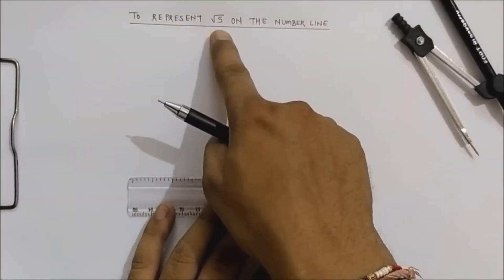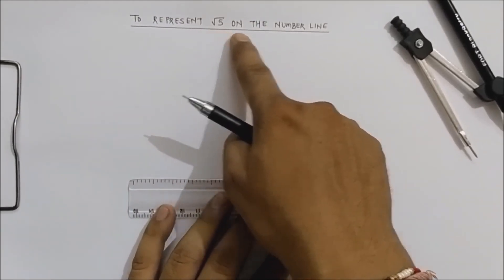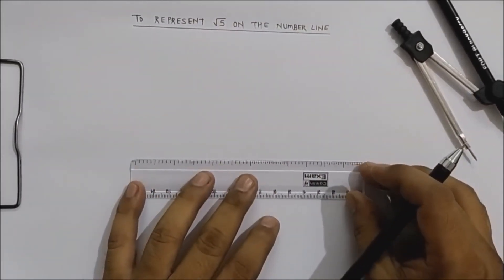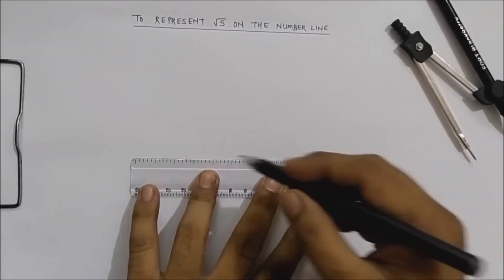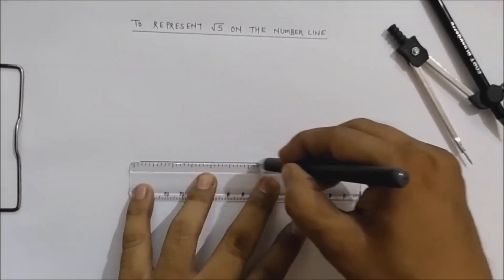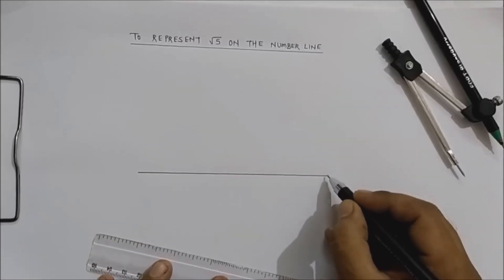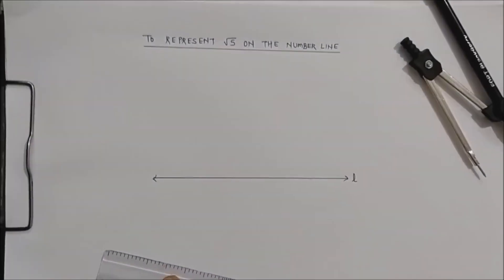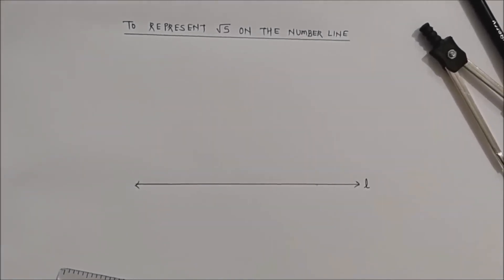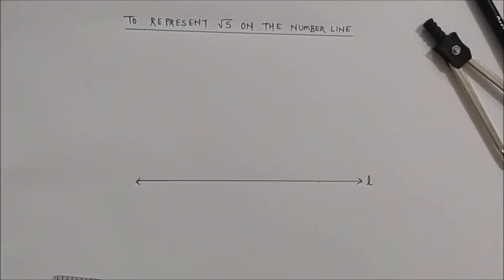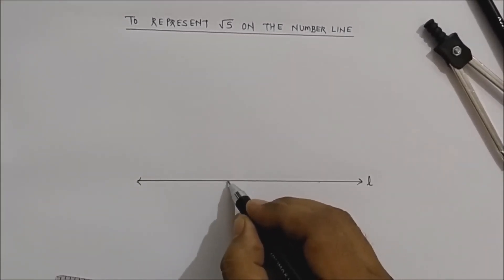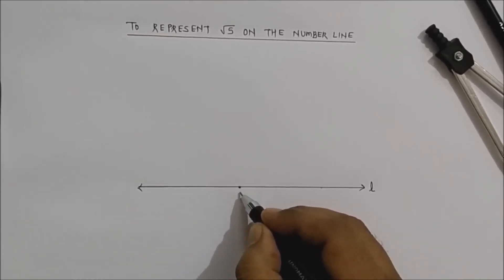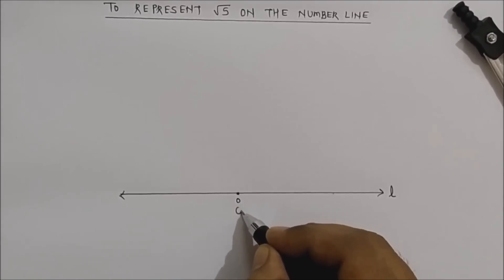Let us see today how to represent √5, the irrational number, on the number line. The first step is to draw a line — say line L. On this line, mark a point here; this is point O at 0.